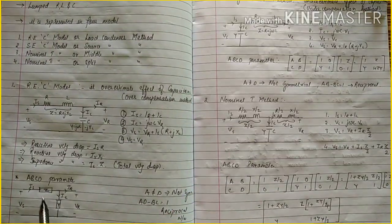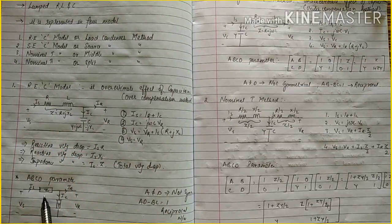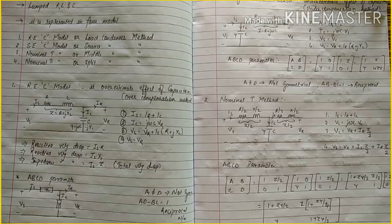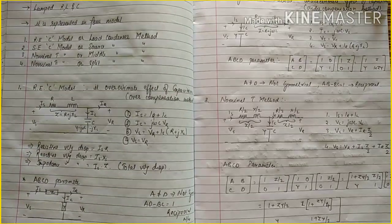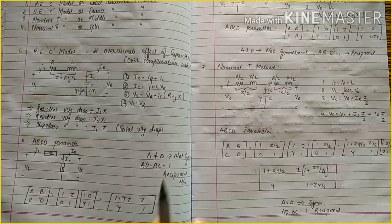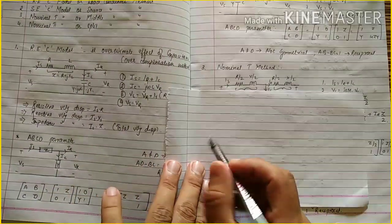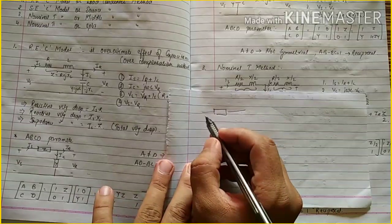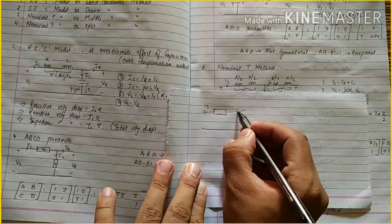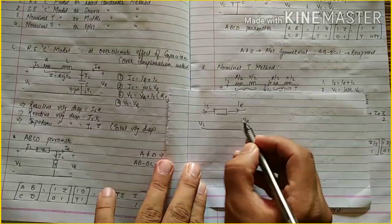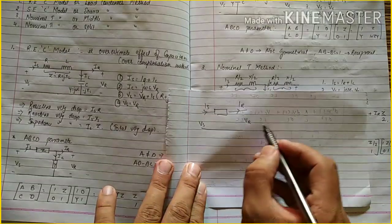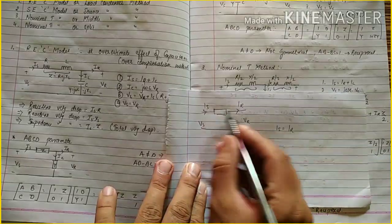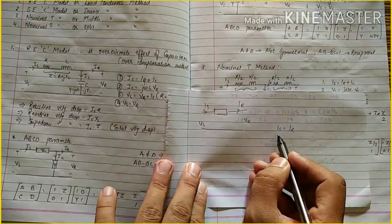Now for the ABCD parameters, we connect the diagram with Z and Y separately and calculate ABCD individually. First, we connect only the impedance. In this condition IS equals IR — this current flows through the series impedance, so IS equals IR.